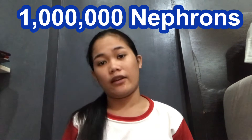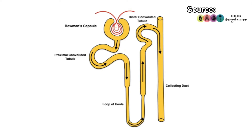Now let's take a look at the structure and the parts of a nephron. At the top we have the Bowman's capsule, which contains the glomerulus, the red portion. This part is the proximal convoluted tubule. And this part, the descending and ascending part, is your loop of Henle. And this part is the distal convoluted tubule. And lastly, the collecting duct.